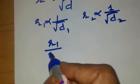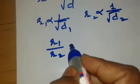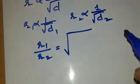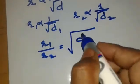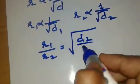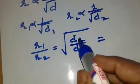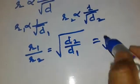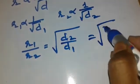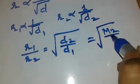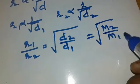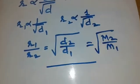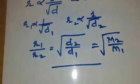R1 upon R2 is equal to square root of d2 upon d1. Now since density depends on the molecular mass, we can write M2 upon M1. And this is what we call Graham's Law of Diffusion.